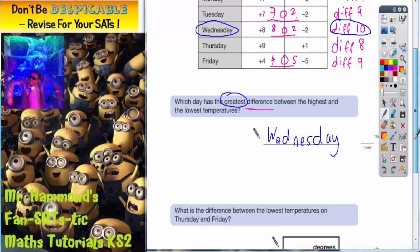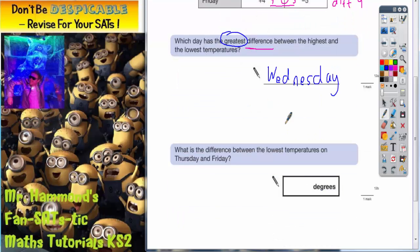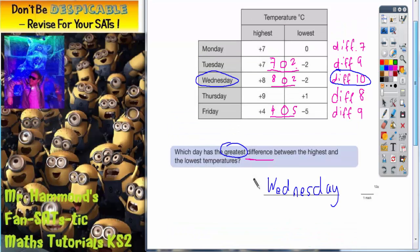Scrolling down, see what we've got to do next. It says what is the difference between the lowest temperatures on Thursday and Friday. So we're only looking at Thursday and Friday and we're only looking at the lowest temperatures. So there's Thursday and Friday and the lowest is in this column. So we're looking at these numbers, positive one and negative five.